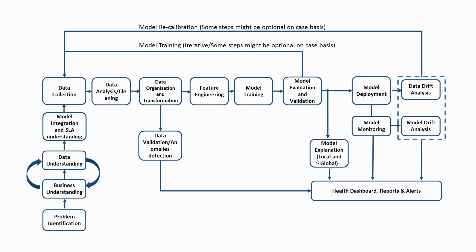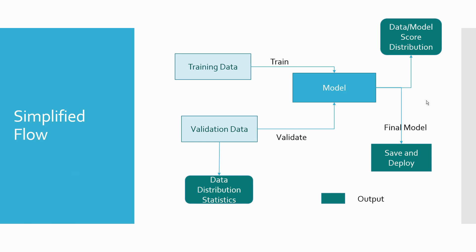You may have seen the end-to-end data lifecycle I discussed in a previous video — starting from problem identification through model deployment. In this video I'm focusing on the last highlighted step: data drift analysis and model drift analysis. You identify your problem, collect data, do feature engineering and transformation, build your model, evaluate it, deploy it, and then you monitor the model for model drift and data drift. I have a simplified version of this that I'll talk through now.